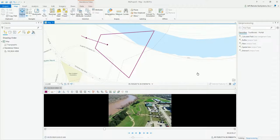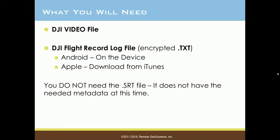We're going to need a couple of things on hand before we get started. The first thing we're going to need is the DJI video file, and the second is the DJI flight record log file. This is the encrypted .txt file — there's also a .dat file, but we want the encrypted .txt file. You get this on Android by getting it from the device itself, and with Apple devices you have to download it from iTunes. You do not need the .srt file, as it does not have the necessary metadata we're going to need to produce the optimized video files for Esri's tools.